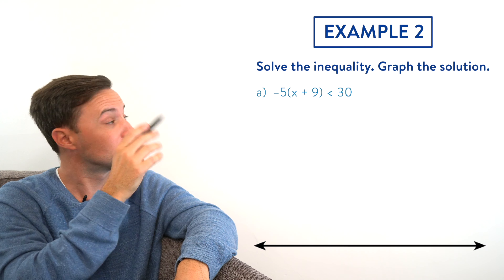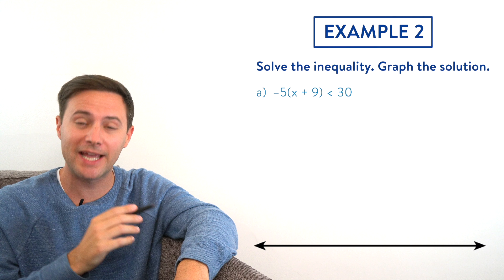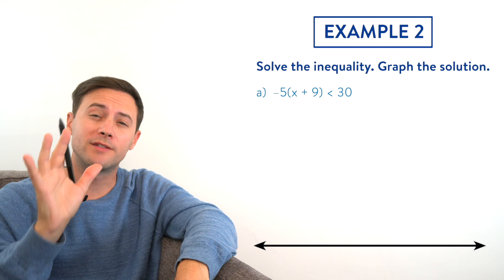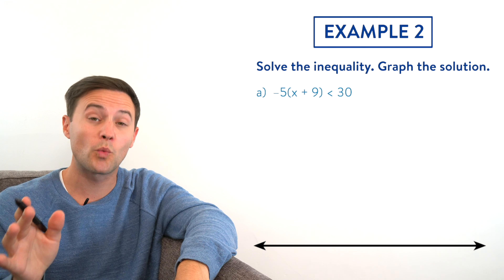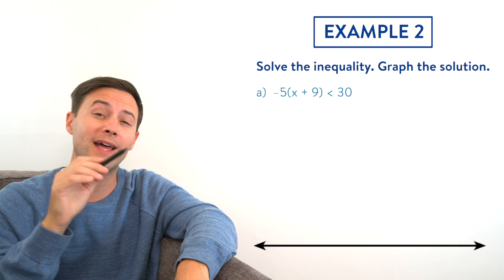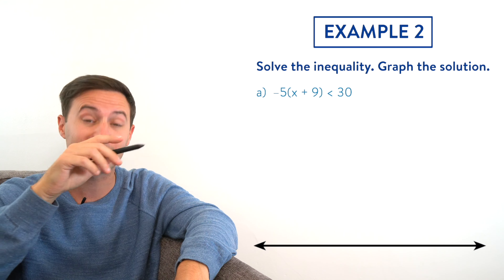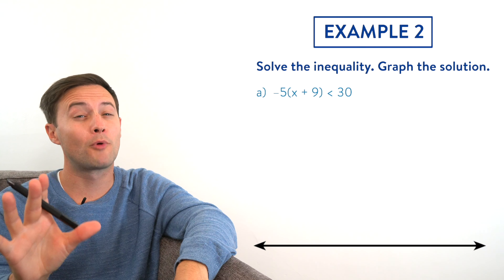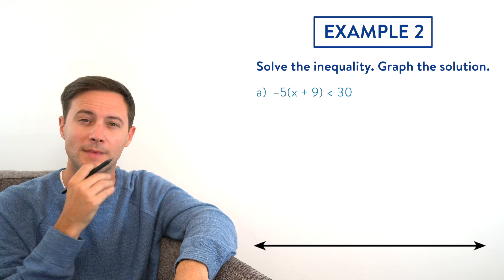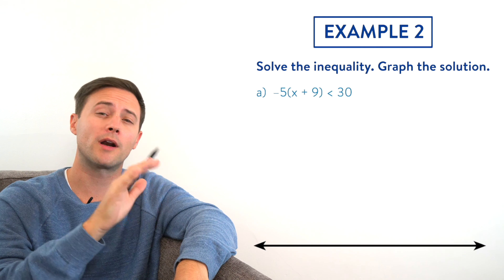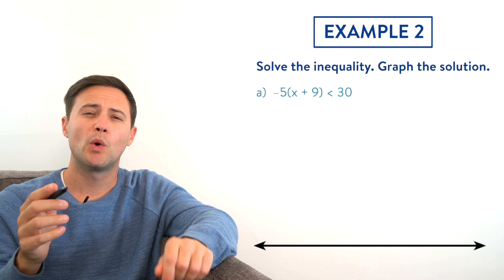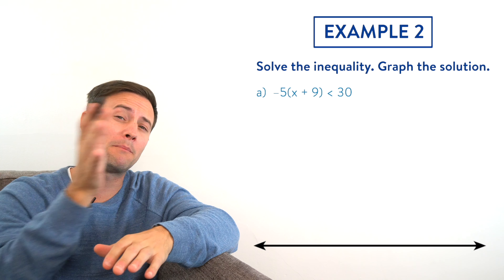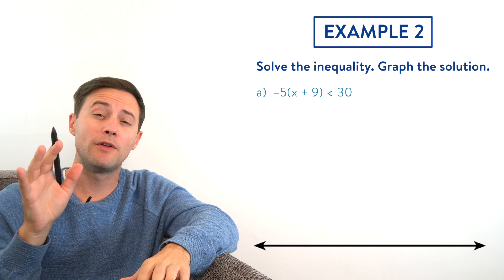We just multiplied both sides of an inequality by a negative number, which means we have to switch the inequality symbol. So now it's less than or equal to, and negative 9 times negative 4 gives us positive 36. So w is less than or equal to 36. Now let's graph: at 36 I put a closed circle and an arrow to the left.